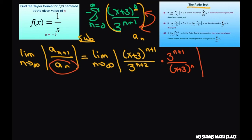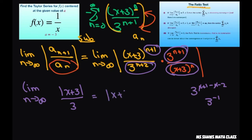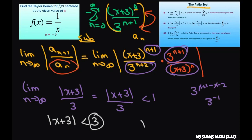Let's simplify all this. Taking the limit as n approaches infinity: when you divide this out, this is just going to be absolute value of x plus 3, and for the 3 terms you have 3 to the n plus 1 minus n minus 2, so that's 3 to the negative first power, which is just 3. That's going to equal the absolute value of x plus 3 divided by 3. Now for convergence, it has to be less than 1. Therefore, the absolute value of x plus 3 cross-multiplied is less than 3. So your radius of convergence is 3.